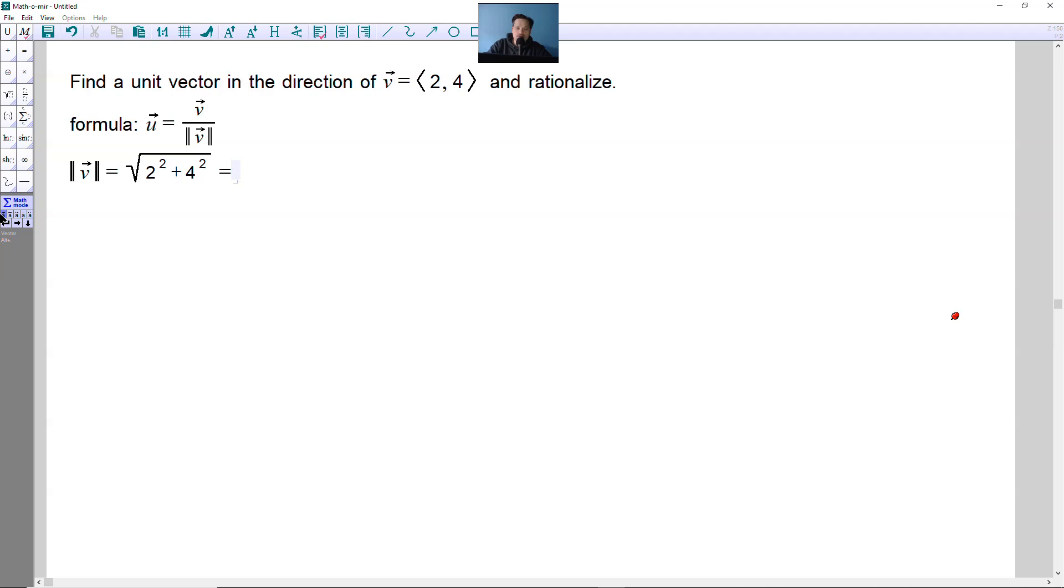Then you just have to simplify this. So 2 squared is 4 plus 16 here. So now this will be 20. Then you just have to break this into individual pieces and simplify a little bit more. So this would be 4 times 5. And then you can distribute the square root, so it's going to be the square root of 4 times the square root of 5. The square root of 4 is 2, and then you copy the other part. So it becomes 2 root 5.